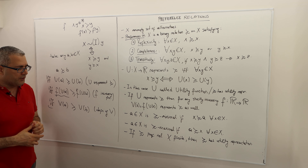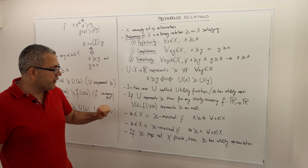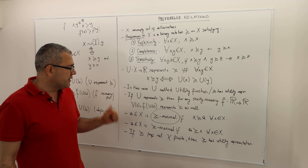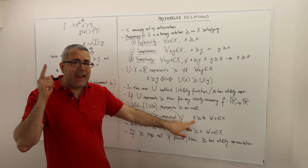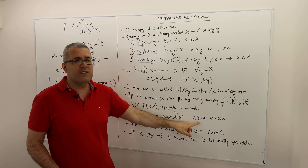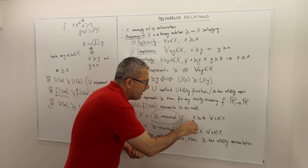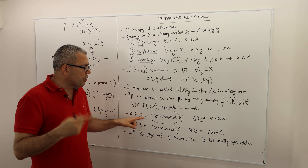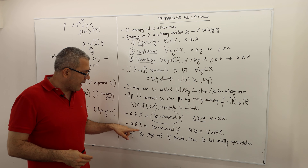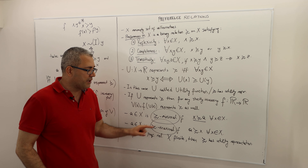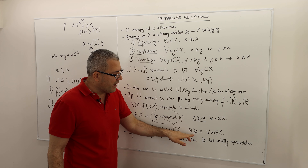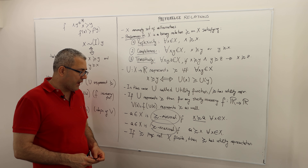A few more definitions. For any alternative a in the set of alternatives, we call it the minimal or worst alternative with respect to the preference relation if every alternative x is at least as good as a. By reflexivity, a is at least as good as itself, and this relation holds for every other x. Symmetrically, a is the best or maximal alternative if a is at least as good as x for every x in the set X.